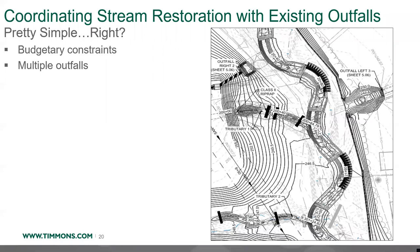It seems pretty simple: fix what's out there and align outfalls to hit at an outer bend. But sometimes it's not that easy. With budgetary constraints, you might not be able to put in an end wall or drop structure. What we like to do is just cut back the existing pipe, grade in a large plunge pool to slow the water down, and let it come across the floodplain slower. You can also have multiple outfalls coming in from different directions — the solution is to give as much floodplain as possible for the water to spread across, plus a plunge pool to slow it down.